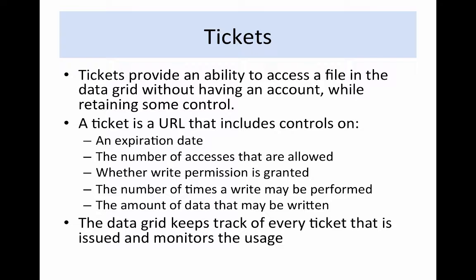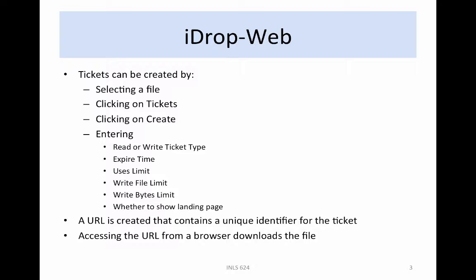Any person who has a ticket can use it to gain access. The controls that are imposed can include an expiration date, limiting the ticket to a specified time period, and the number of allowed accesses. The ticket may allow an unlimited number of downloads or a specified number. Permission to write data into the data grid is also possible, though this is a dangerous option since an unknown person can deposit data. Additional controls include the number of times a write may be performed and the amount of data in bytes that may be written. The data grid tracks every use of every ticket and monitors usage.